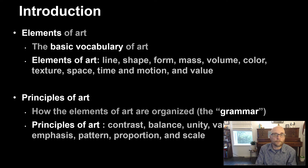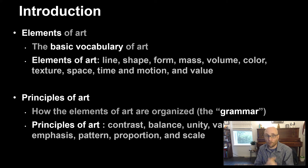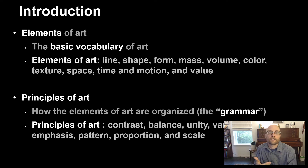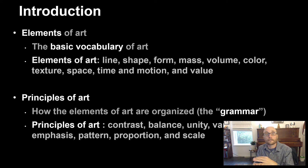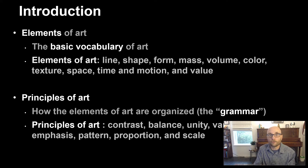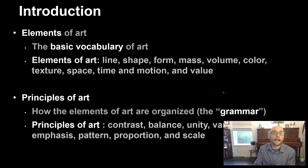These first ten chapters, the first two or so weeks of this course, we're going to be focusing on these concepts. The elements of art are the basic vocabulary of art — in the same way our languages are made up of nouns, verbs, pronouns, adjectives, and adverbs. All images are created from line, shape, form, mass, volume, color, texture, space, time and motion, and value. The principles are how those elements are arranged.